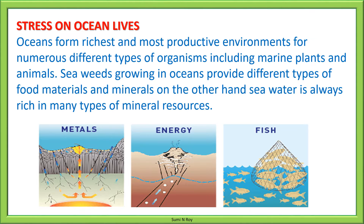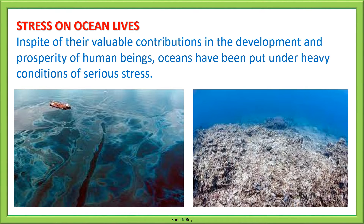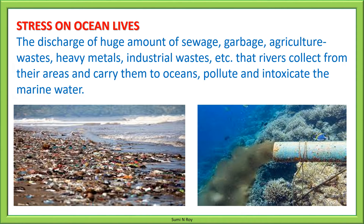Next, let us discuss stress on ocean lives. Oceans form the richest and most productive environment for numerous different types of organisms, including marine plants and animals. Seaweeds growing in oceans provide different types of food materials and minerals. Seawater is also rich in many types of mineral resources. However, oceans have been put under serious stress. The discharge of huge amounts of sewage, garbage, agricultural waste, heavy metals, and industrial waste that rivers collect from their areas and carry to oceans pollutes and intoxicates marine water.